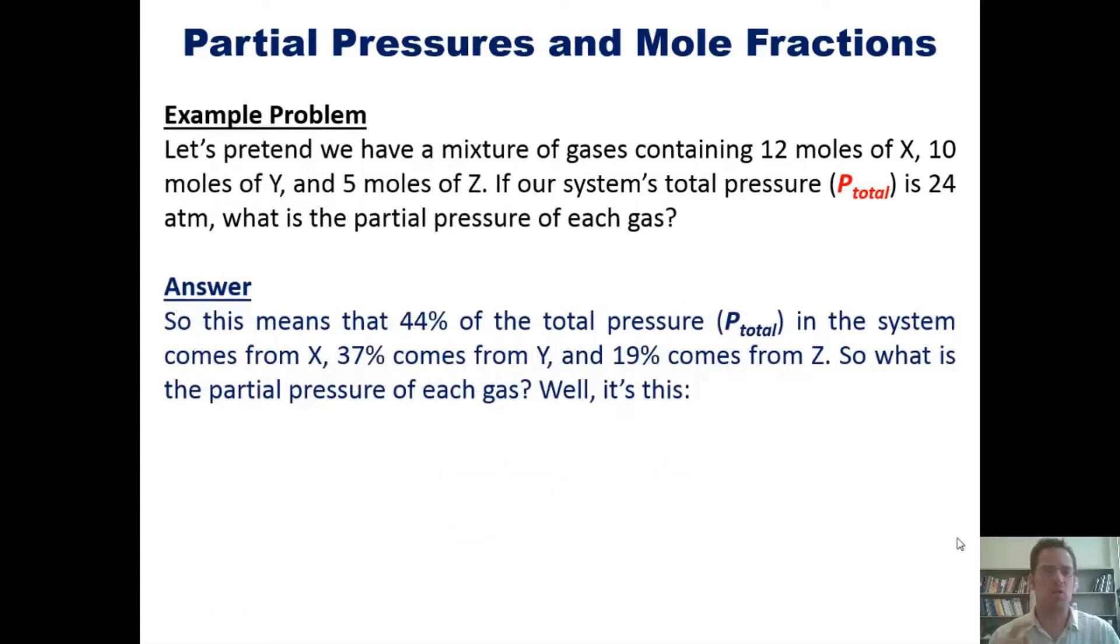So this means that 44% of the total pressure in the system comes from X, 37% from Y, and 19% from Z. So what is the partial pressure of each gas? Well, it's this.